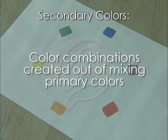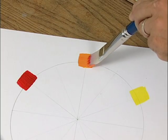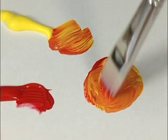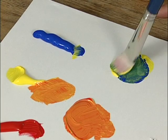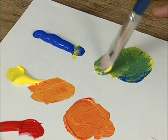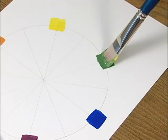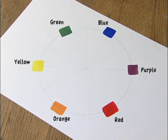Secondary colors are the color combinations created out of mixing primary colors. Secondary colors are orange, purple, and green. Orange is the product of mixing yellow and red together. Purple is the product of mixing red and blue together. Green is the product of mixing yellow and blue together. Mix each of the primary colors to create your secondary colors and paint them in the appropriate spaces until your color chart looks like this.